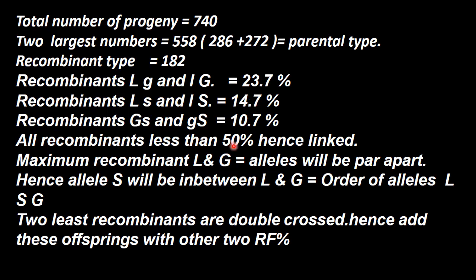As all recombinant percentages are less than 50 percent, it shows that these are all linked genes. The maximum recombinant percentage is 23.7, which is between L and G. So L and G alleles will be far apart — this is the maximum distance.